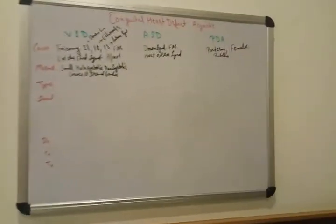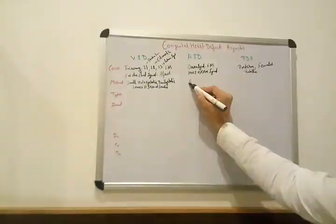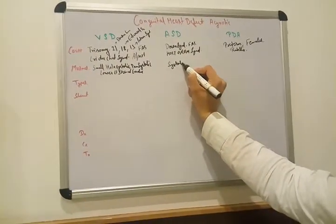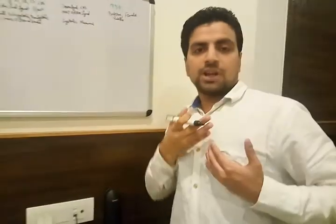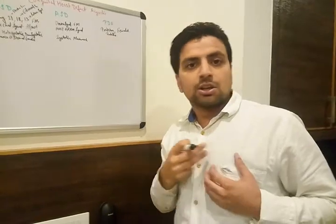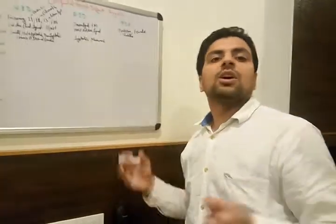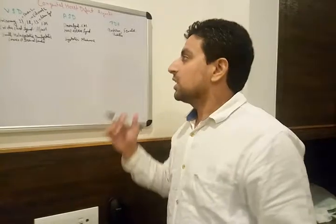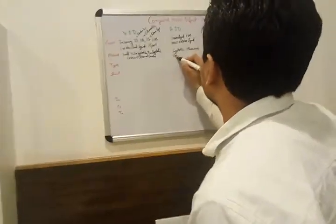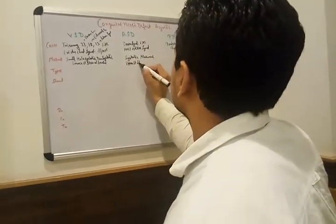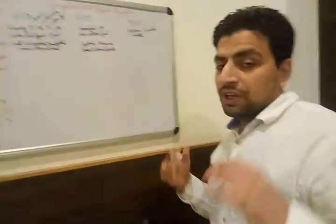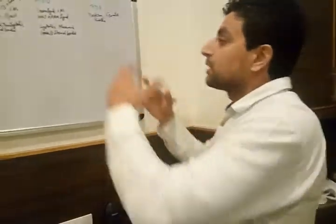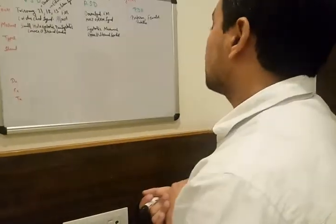In the case of ASD, atrial septal defect, there is also a systolic murmur. Since the atria are located in the upper part of the heart, we listen for this murmur at the upper left sternal border. We identify these murmurs using a stethoscope.